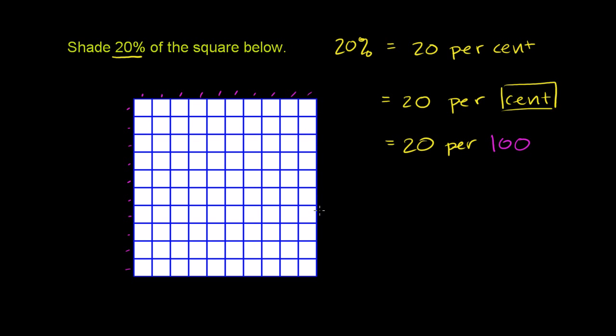If we want to shade this—or another way to say it—this larger square is broken up into 100 smaller squares. So it's already broken up into the 100.